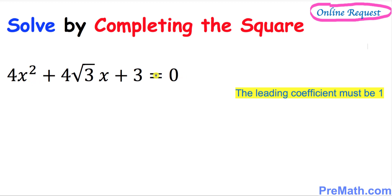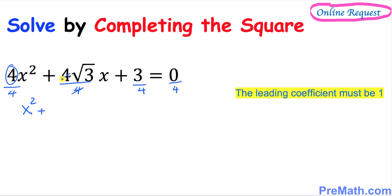The very first step is we want to make sure that our leading coefficient must be 1. In this case the leading coefficient is 4. So we can make it 1 by dividing by 4 — you must divide by 4 across the board, each and every term. So what we get is 1x squared, and the 4s cancel out, giving us x squared plus square root of 3x plus 3 over 4 equals 0.